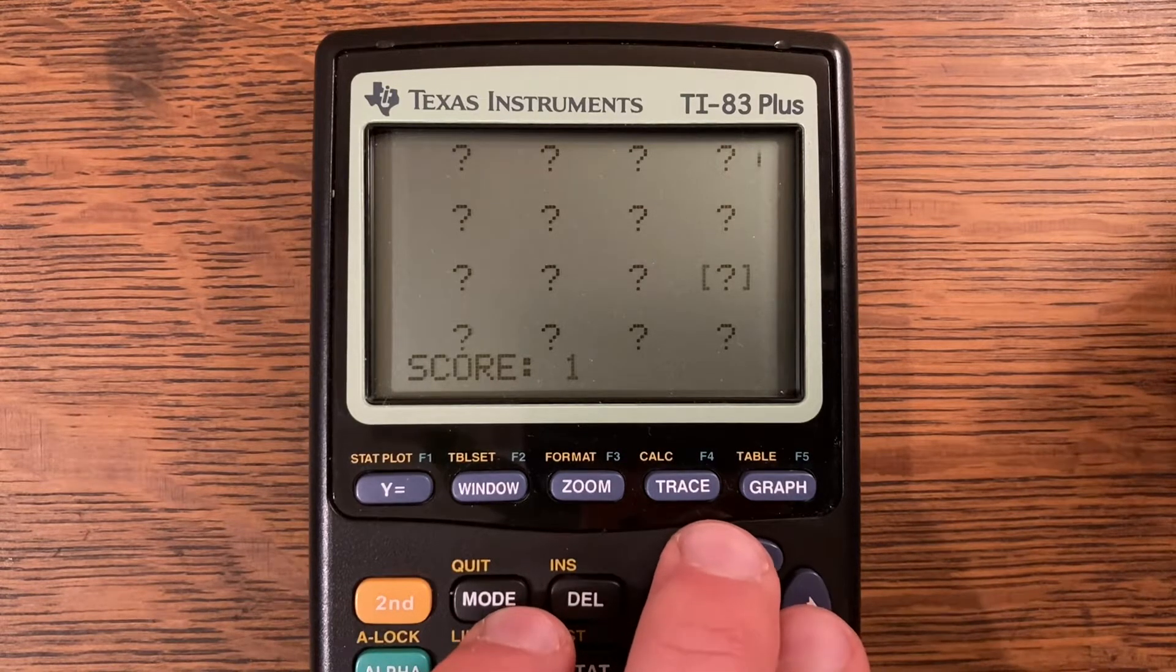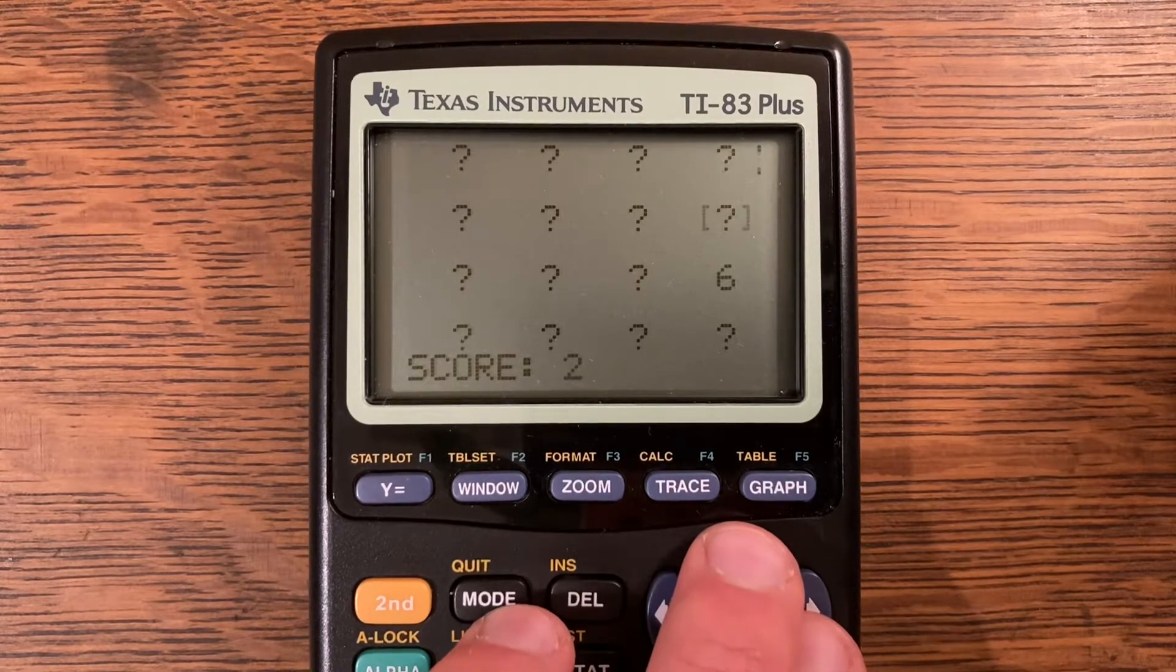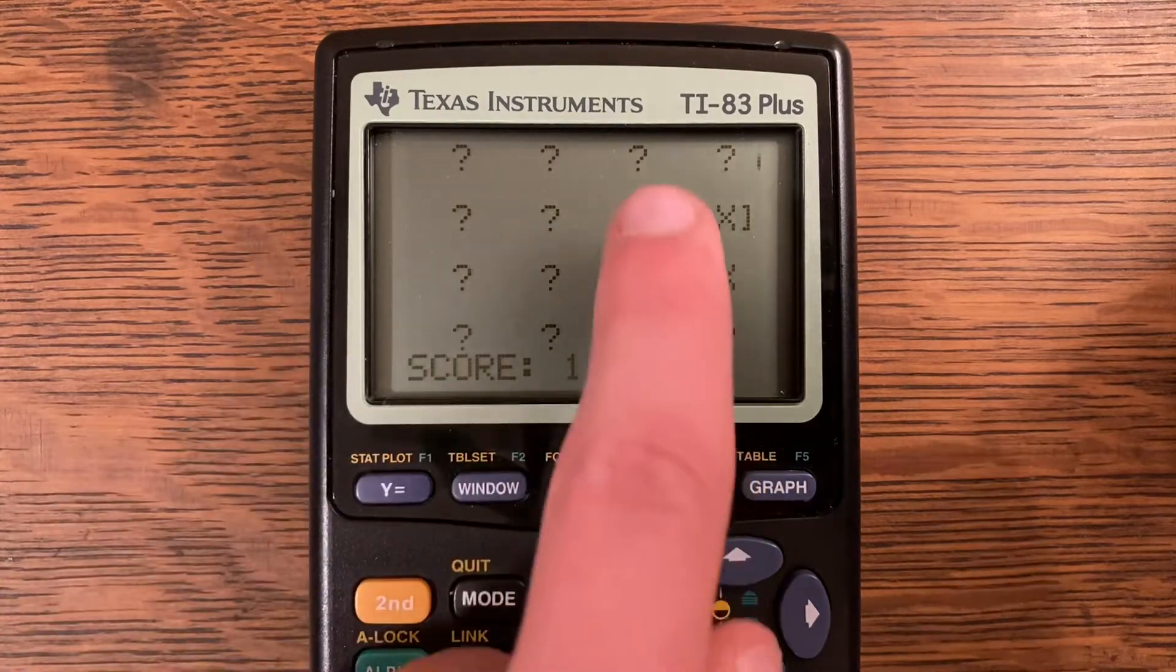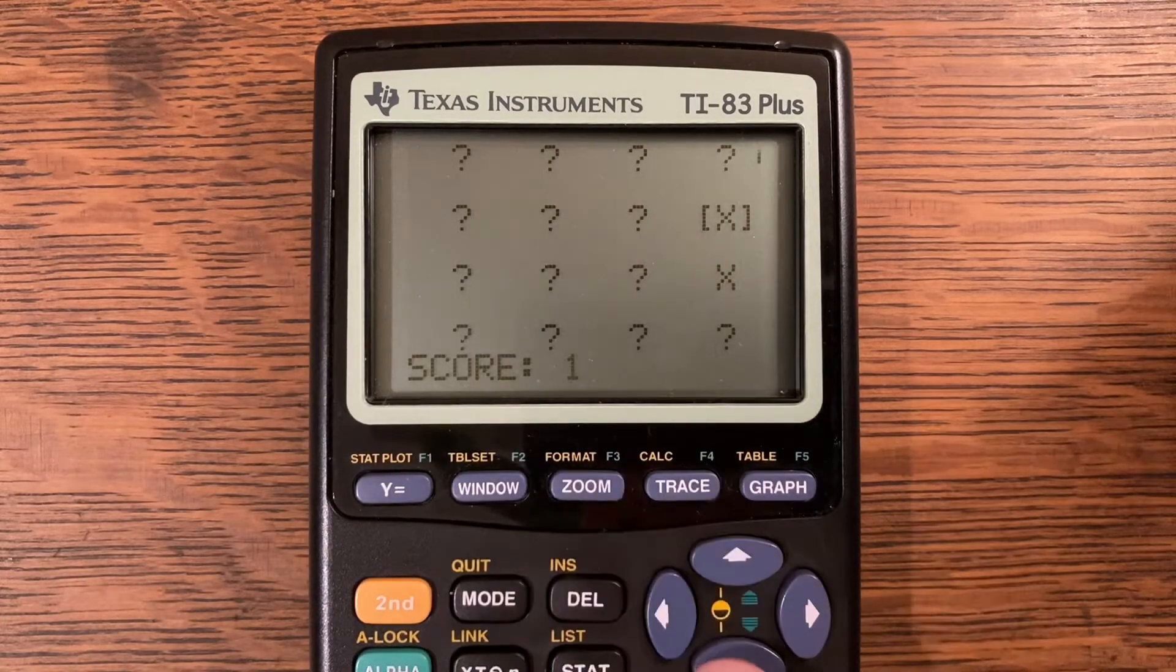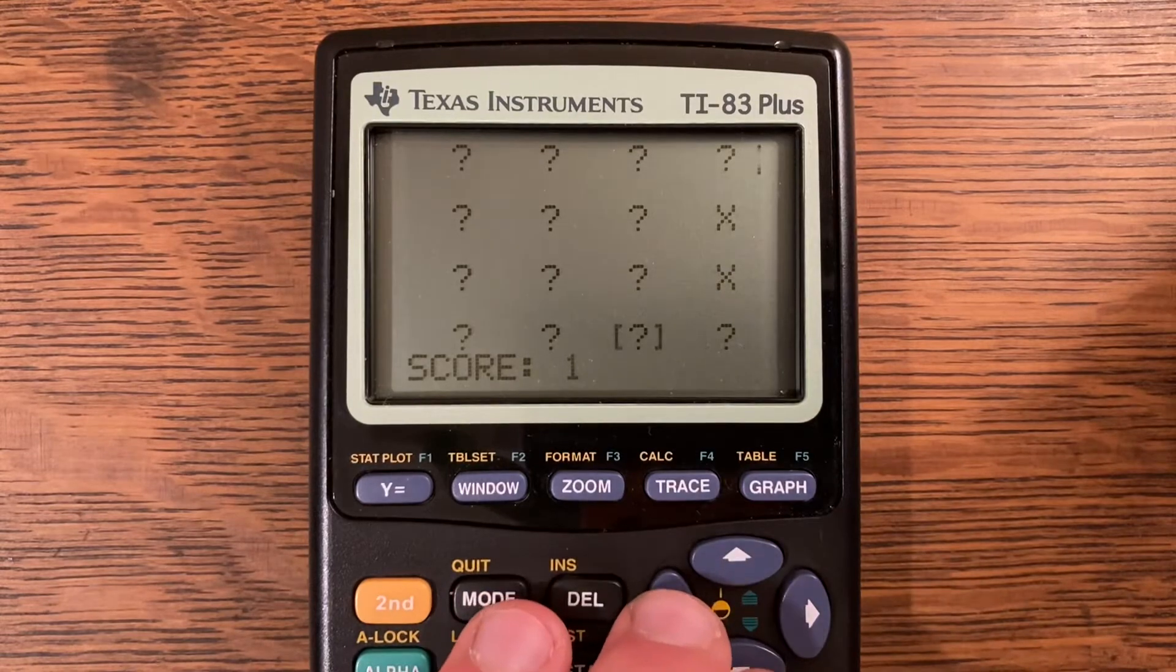Now I can guess wherever I think the other eight is, and that's a one. I'll keep selecting. Oh, that happened to be a match! That one was a six and that one was a six. That was just a really lucky guess right there.